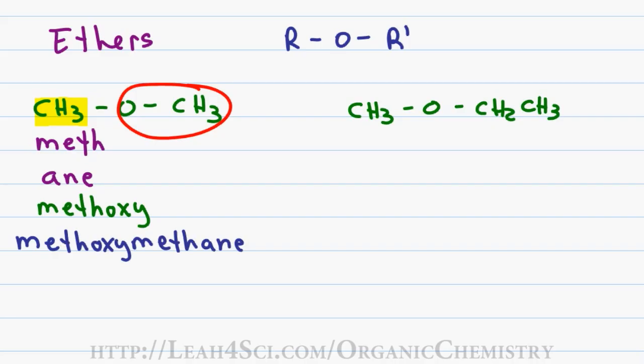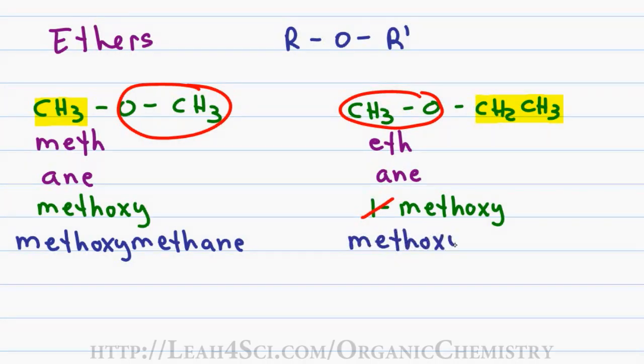Same thing applies to my second ether. In this case my longest carbon chain has two carbons giving me a first name of eth. Only single bonds gives me a last name of ane. A one carbon substituent on the oxygen gives me a methoxy. Once again carbon 1 is understood and can be ignored for a final name of methoxyethane.